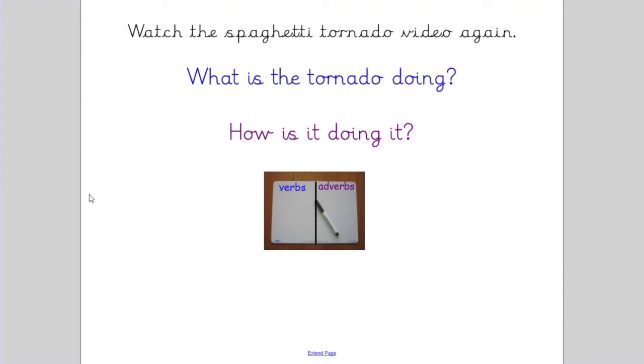The first thing I want you to do is watch the spaghetti tornado video again and we're going to write a list of words. Divide your piece of paper in half. On one side we're going to write a list of verbs and the other side we're going to write a list of adverbs. Where are we going to get them from?